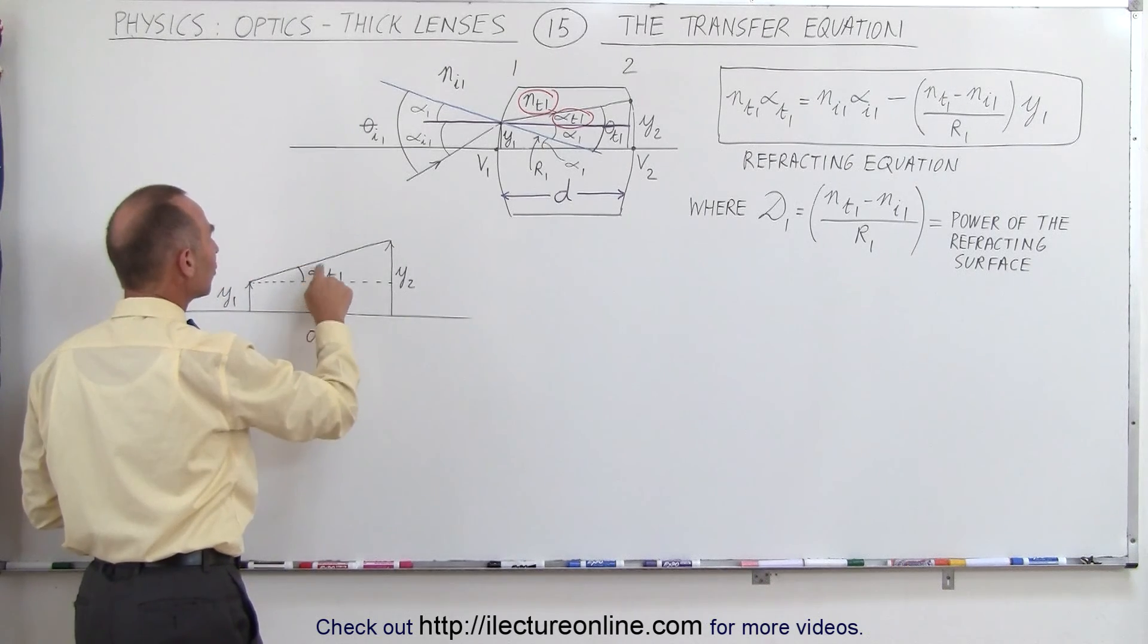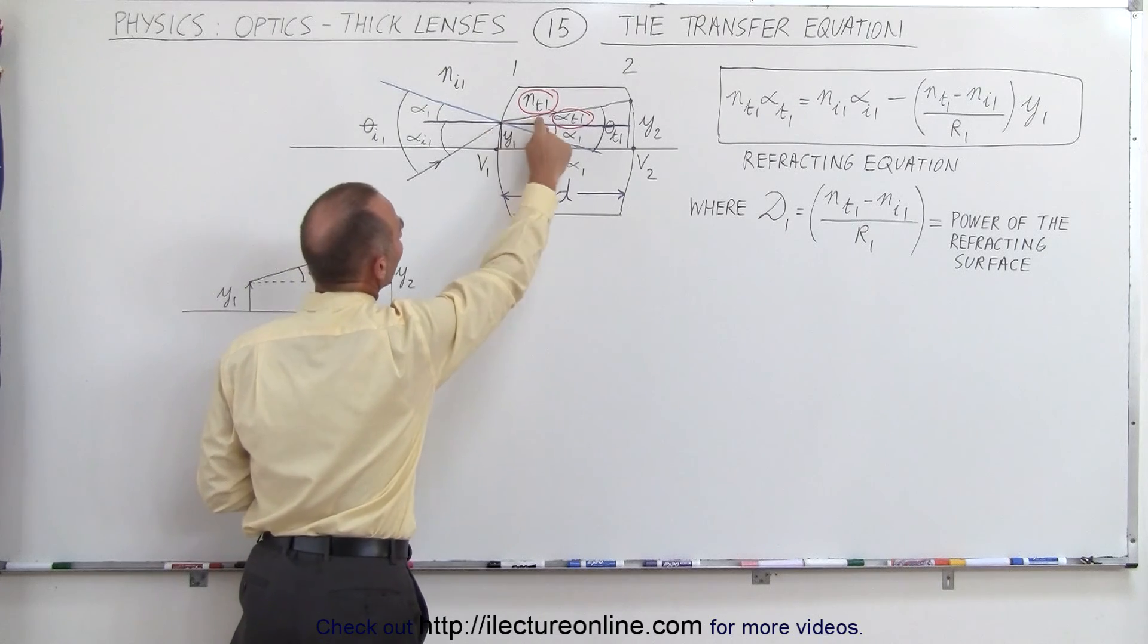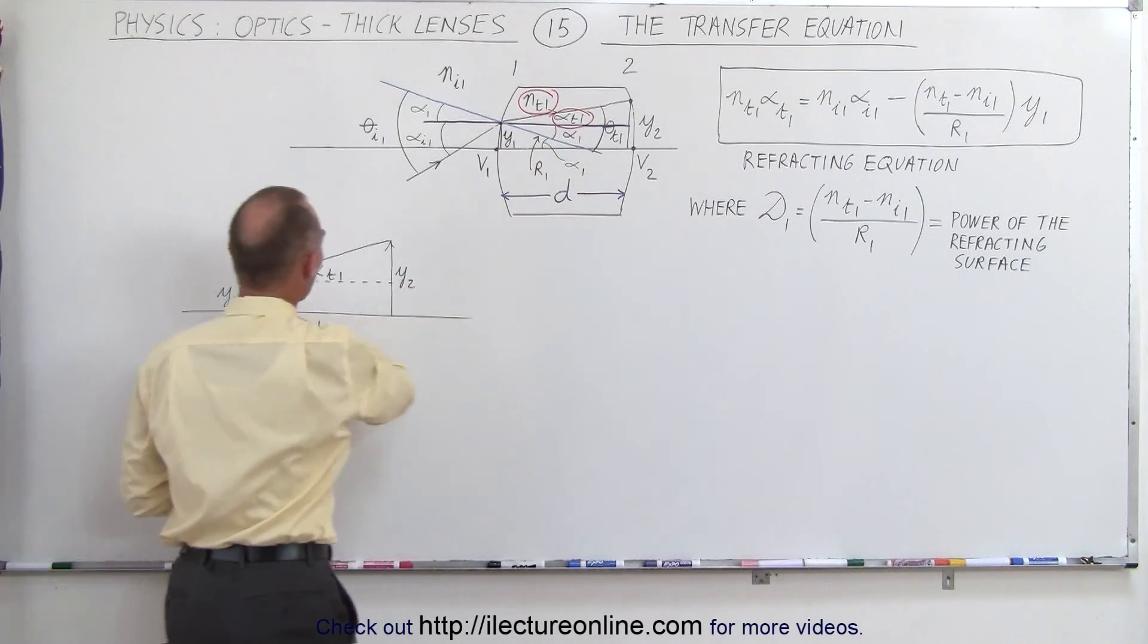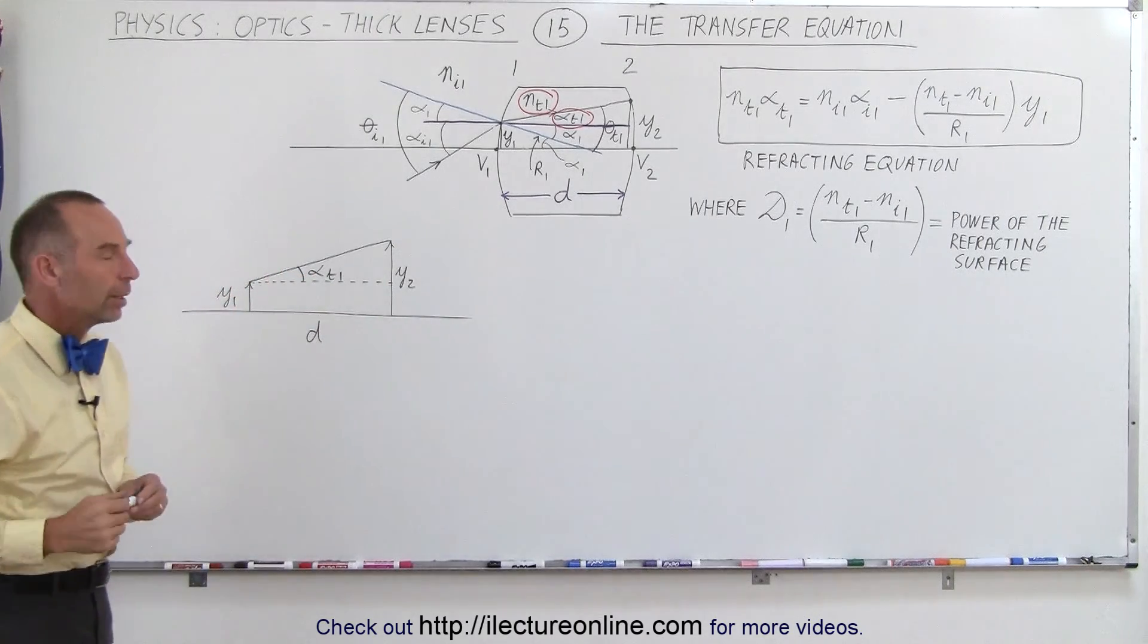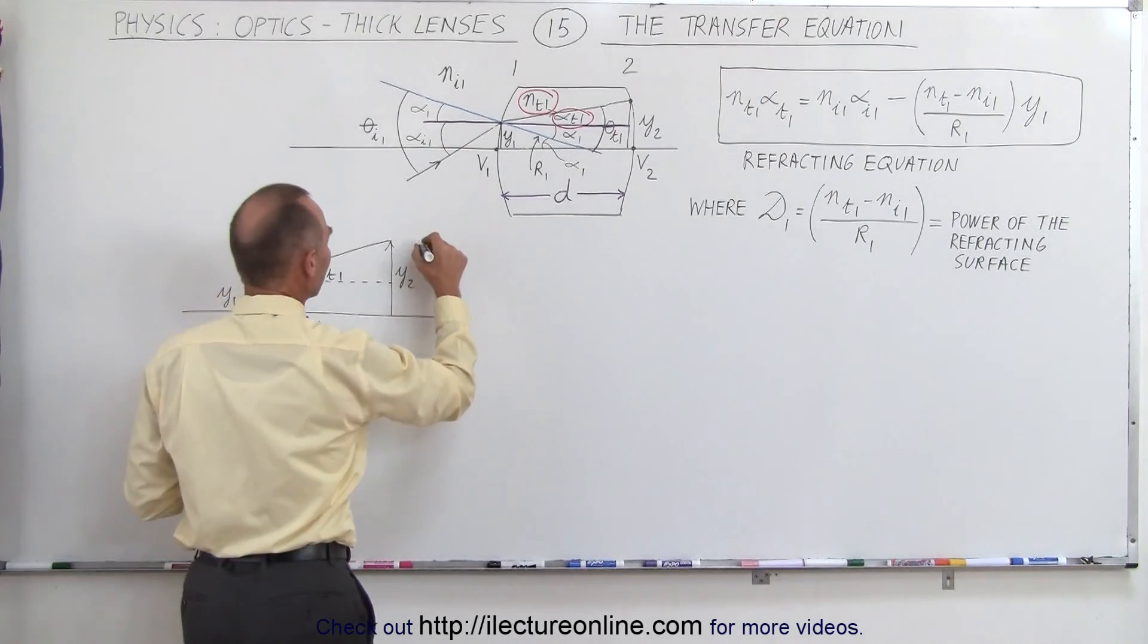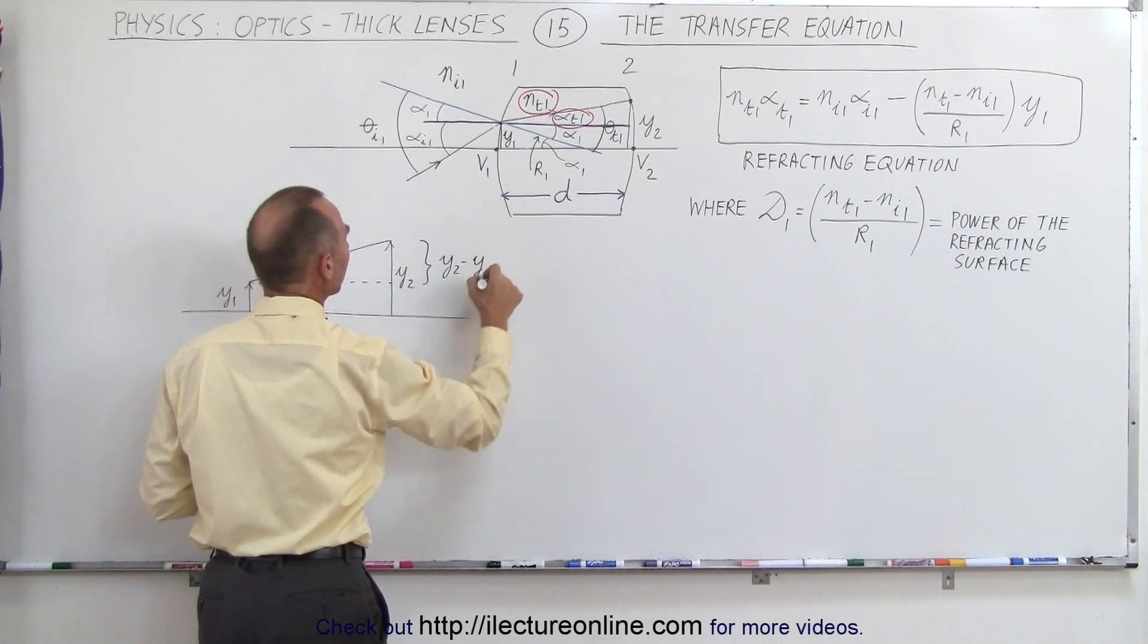And then we have the angle here, which is alpha t1, that's the transmitted angle of the ray as it crosses the boundary relative to the horizontal line here, which is parallel to the optical axis. Now this distance right here, this gaining height is the difference between y2 minus y1.